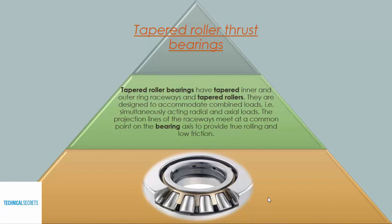Now we look at tapered roller thrust bearings. Tapered roller bearings have tapered inner and outer ring raceways and tapered rollers. They are designed to accommodate combined loads — high symmetrically acting radial and axial loads. The projection lines of the raceways meet at a common point on the bearing axis to provide true rolling and low friction.